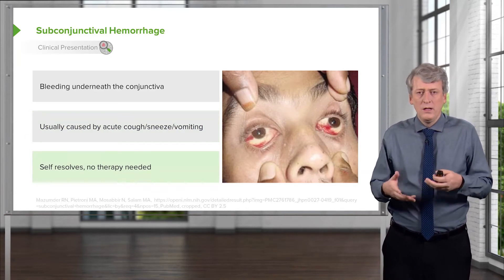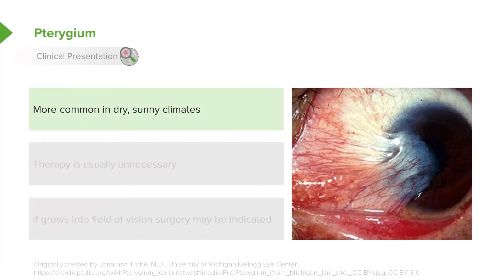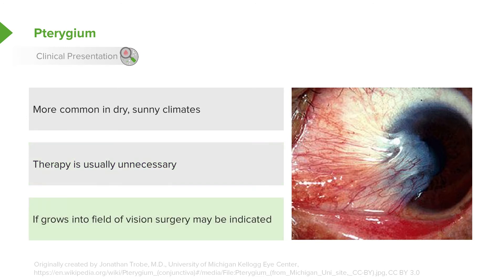Sometimes patients will show up worried about this. An unusual one we see more often in the American Southwest, caused by very dry or sunny climates, is called a pterygium. These pterygium can grow out from the corners of the eye and very rarely can actually obstruct vision. Usually they're asymptomatic and therapy is unnecessary. If it grows into the field of vision, surgery may be indicated and you should consult an ophthalmologist.